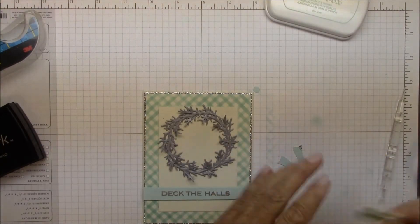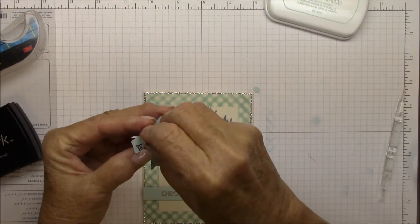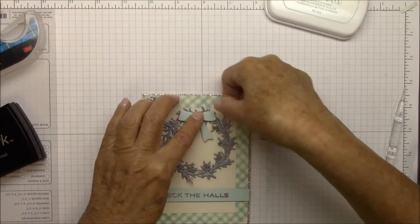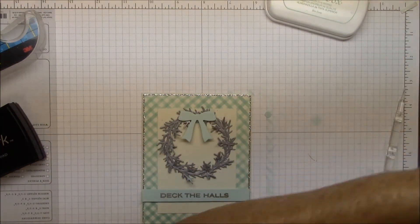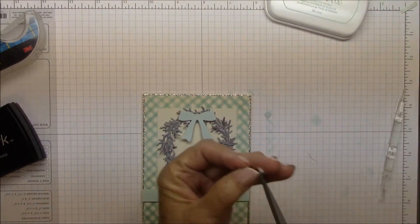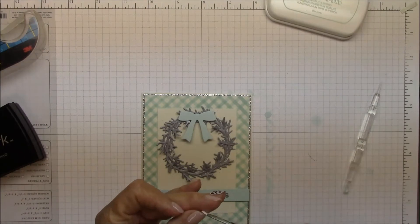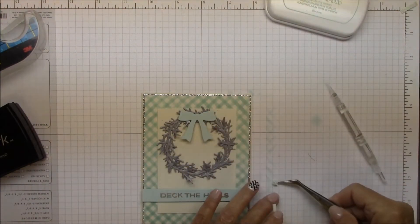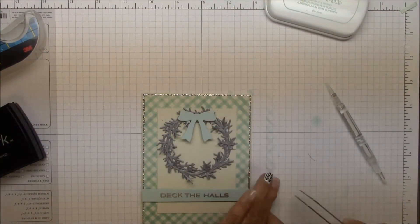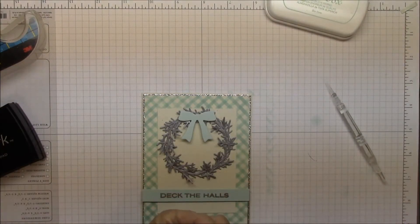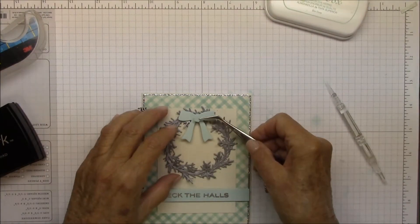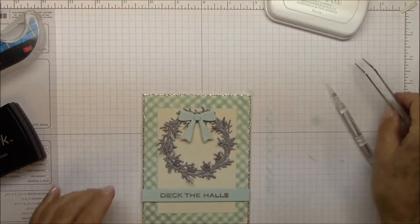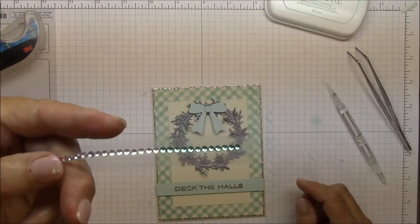And I'm going to add my bow. As you can see, I used a little piece of scrap paper for that. Always a good thing. That's popped up as well. And I cut two copies of the bow and trimmed out just the very center piece, because I'm going to pop that up on a little piece of foam as well. Just those little touches like that add so much when you're looking at a card.